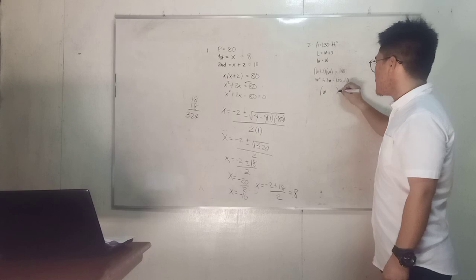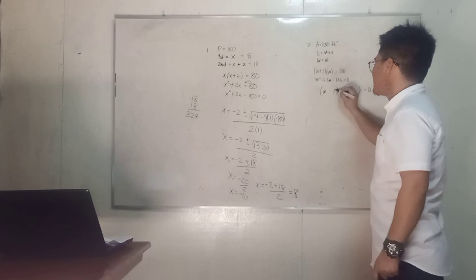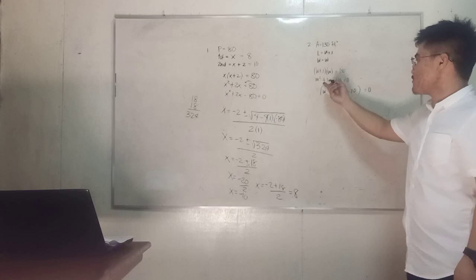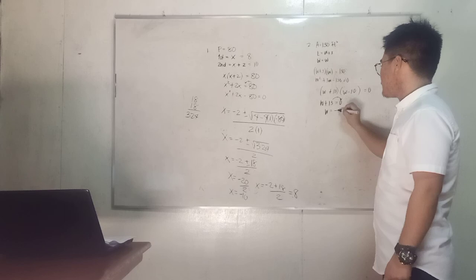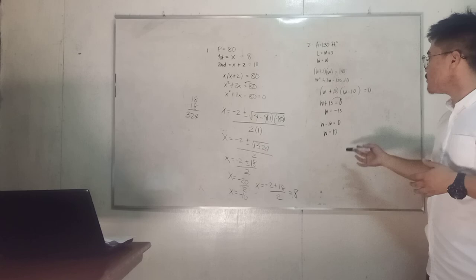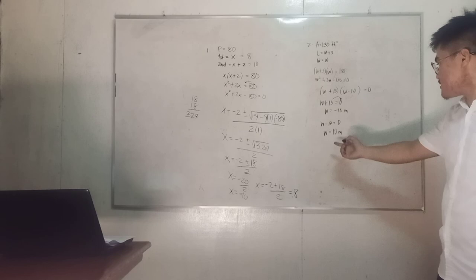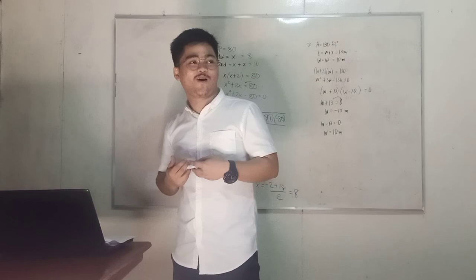Now try to use the factoring method. We have the product is negative 130. We have 13 and negative 10. Does it give us a sum of 3w? Yes, 13 minus 10 is 3. So we have w plus 13 equals zero, then w is equal to negative 13. And w minus 10 equals zero, then w is equal to positive 10. Like what we did in our example, we only consider our positive distance, which is 10 meters. So we have 10 meters as our width and 13 meters as our length. Everybody got the correct answer? Wow, very good, everybody got the correct answer.